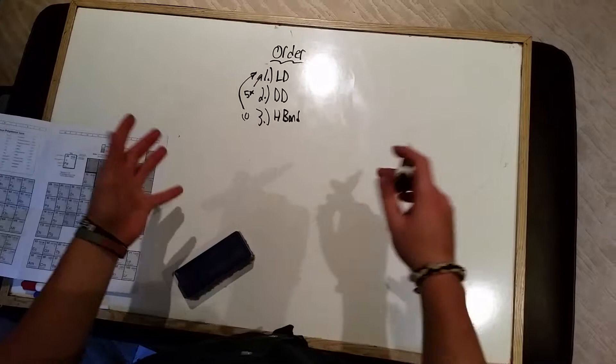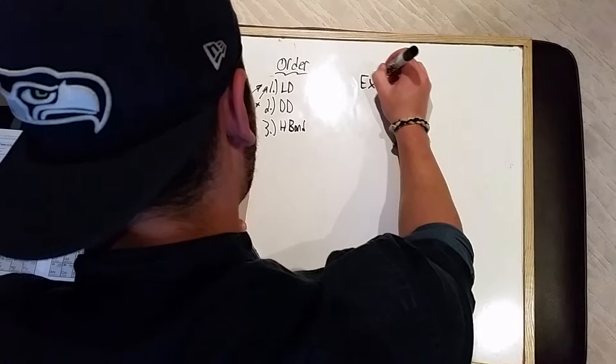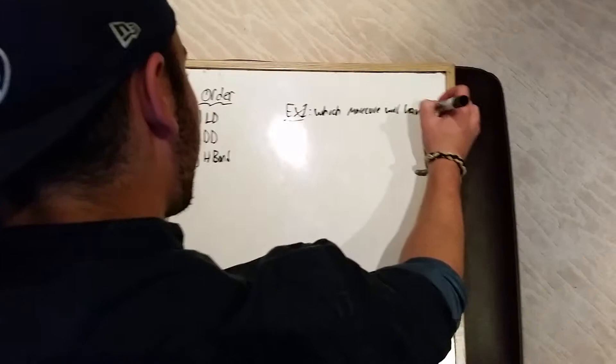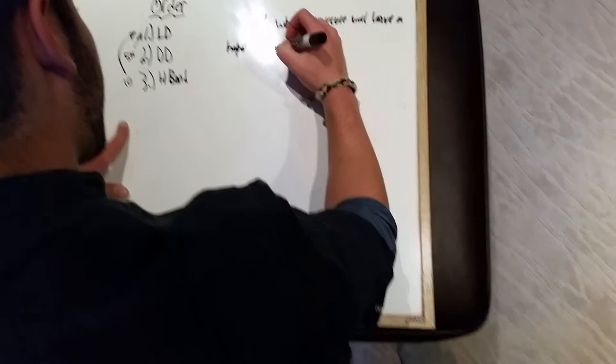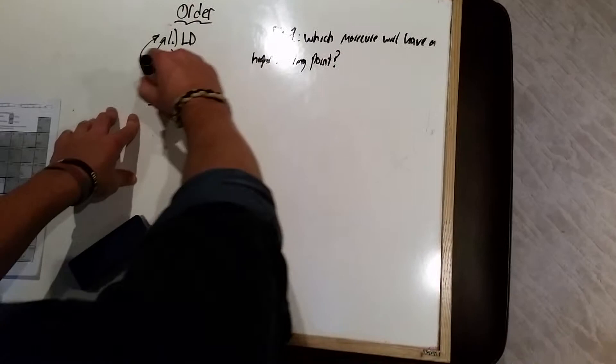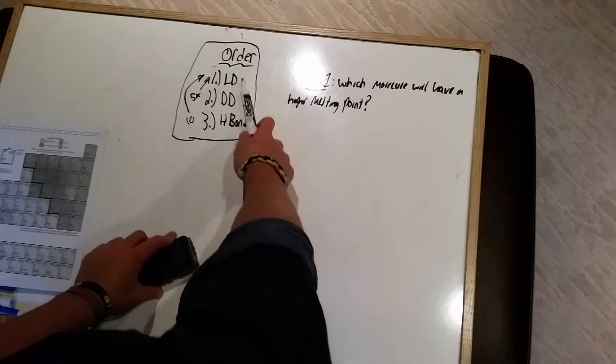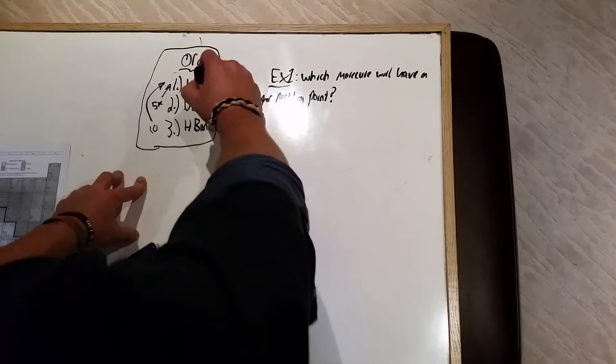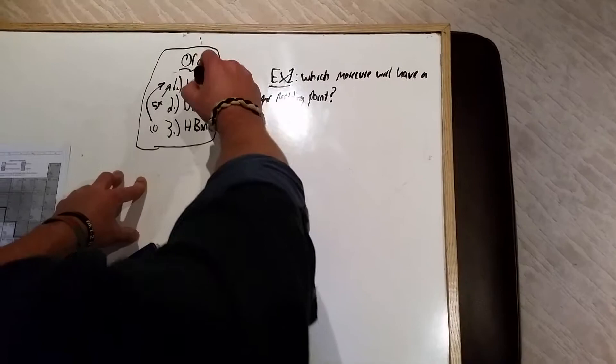So if you have a molecule with very strong intermolecular forces, or all three types, it will have a very high melting point. If it doesn't have many of them, it will have a very low one. Also worth noting: you cannot have hydrogen bonding without also having dipole-dipole, since hydrogen bonding is a very specific type of dipole-dipole force.